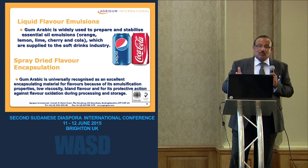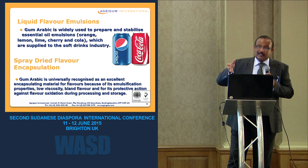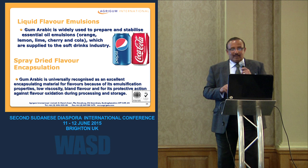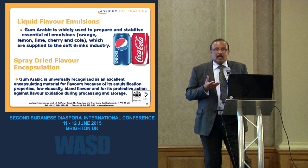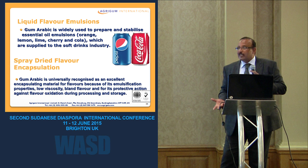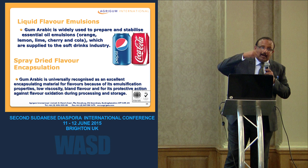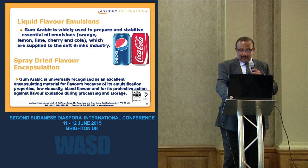For beverages, gum Arabic is used in Pepsi Cola and Coca Cola, which consider it the gold standard for emulsification. Notably, there is currently an embargo on Sudan, and the only exemption is for Coca-Cola and Pepsi-Cola — proving how important it is. For spray-dried flavor encapsulation, the oil-soluble flavors are mixed with a gum solution to form an emulsion, then spray-dried to produce a powder where the gum forms a film around the flavor. When dissolved in water, the gum dissolves and the flavor releases.